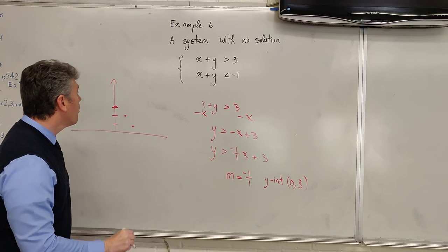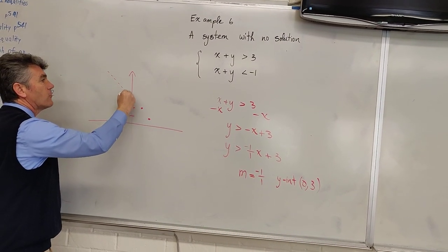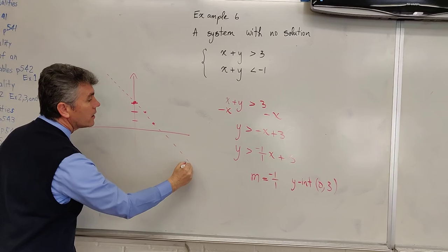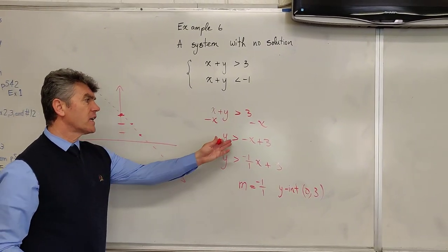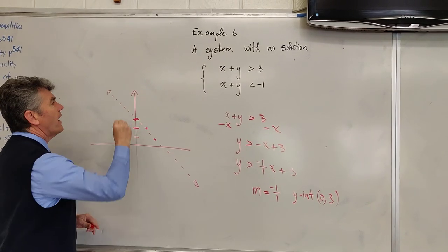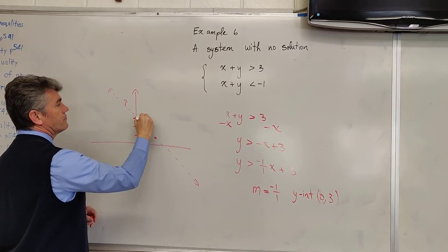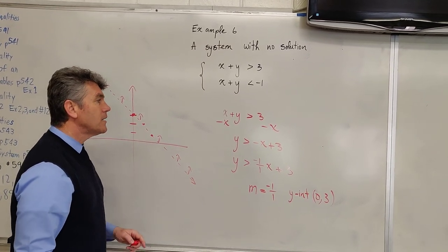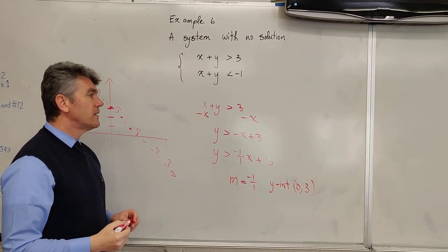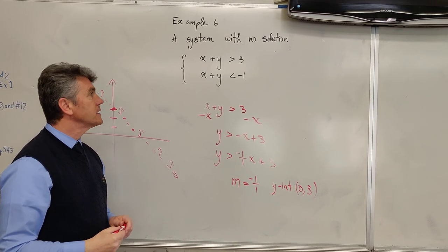Which means no point on the boundary line satisfies the inequality, so draw a dashed line. And greater than again suggests upper half-plane. So any point that is above this line will satisfy the inequality y is greater than negative x plus 3.